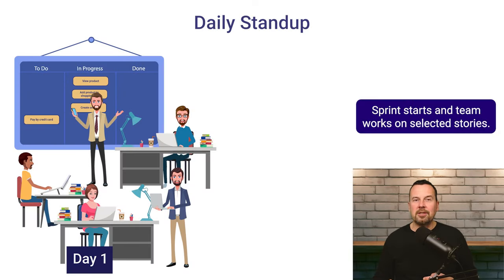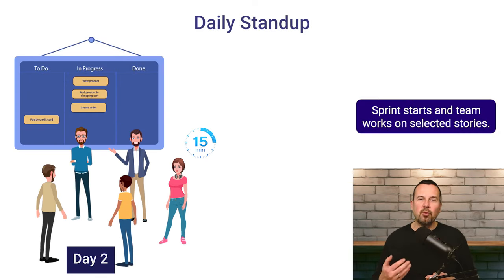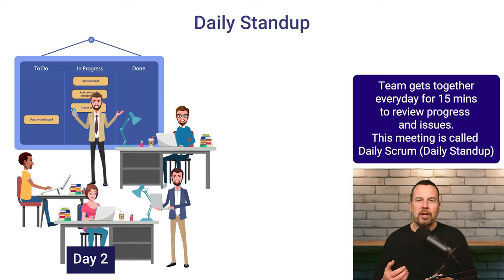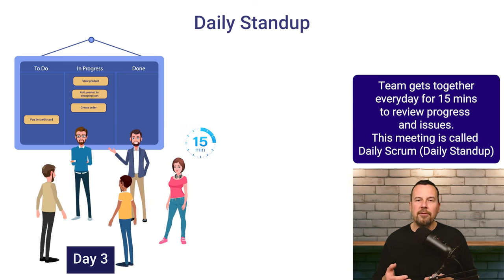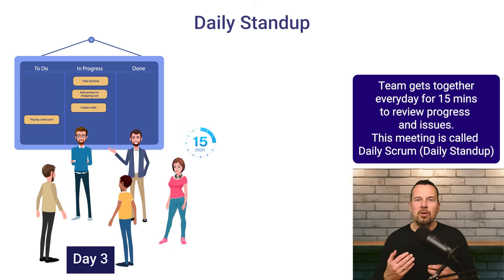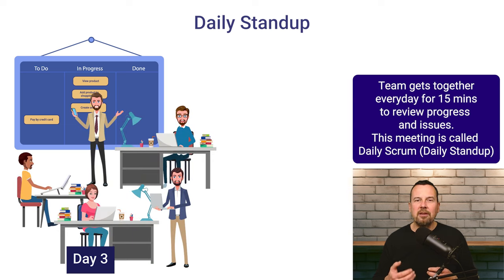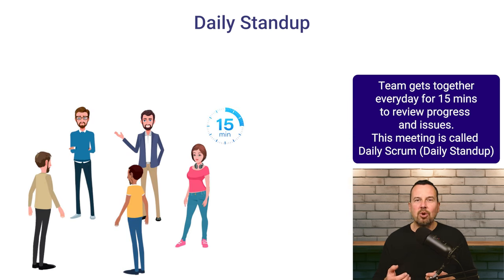Then the sprint starts and the team is working on the selected stories. While they are working, they will get together every day for 15 minutes to review the progress of the work and identify any problems they might have encountered. This is called the daily Scrum or daily stand-up.